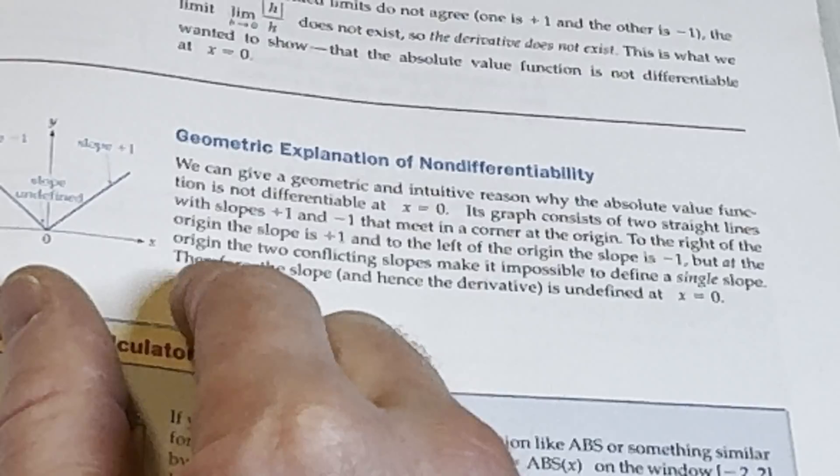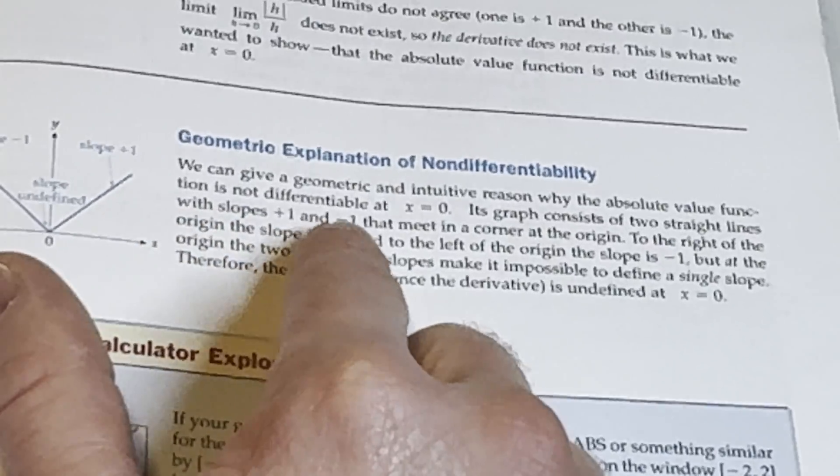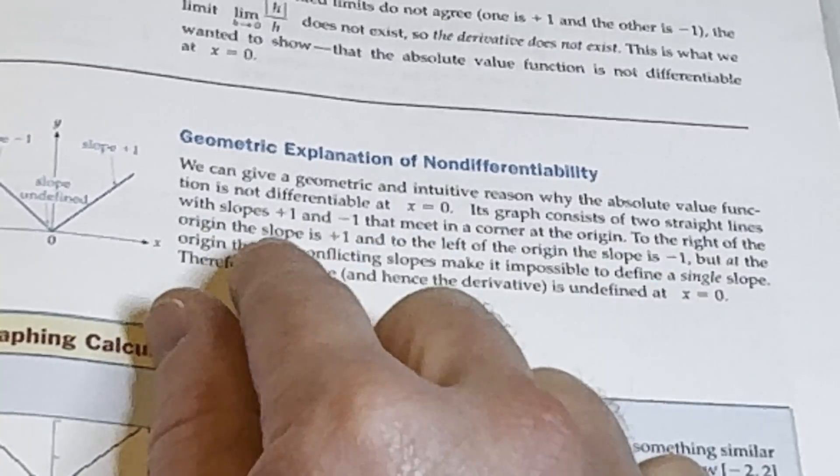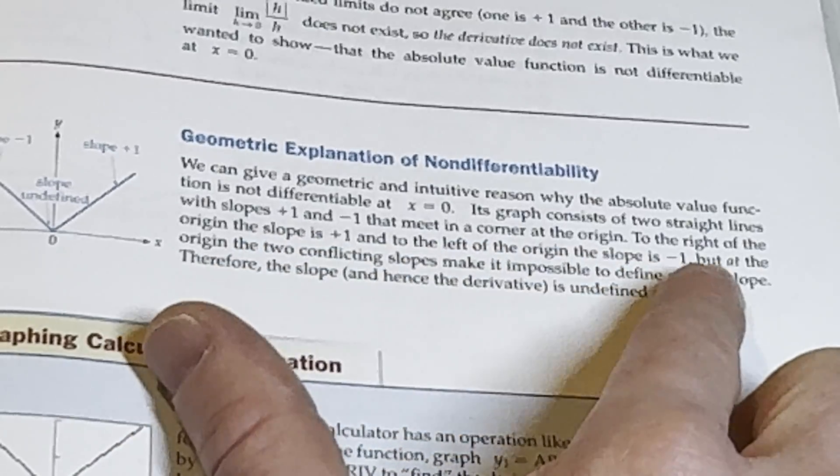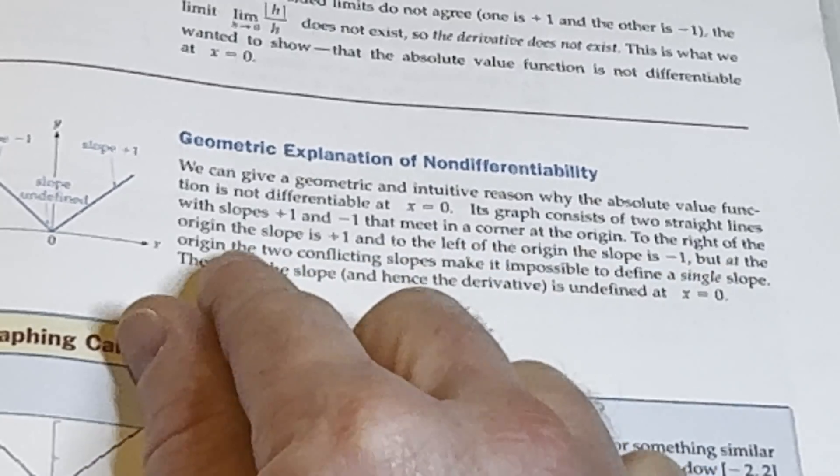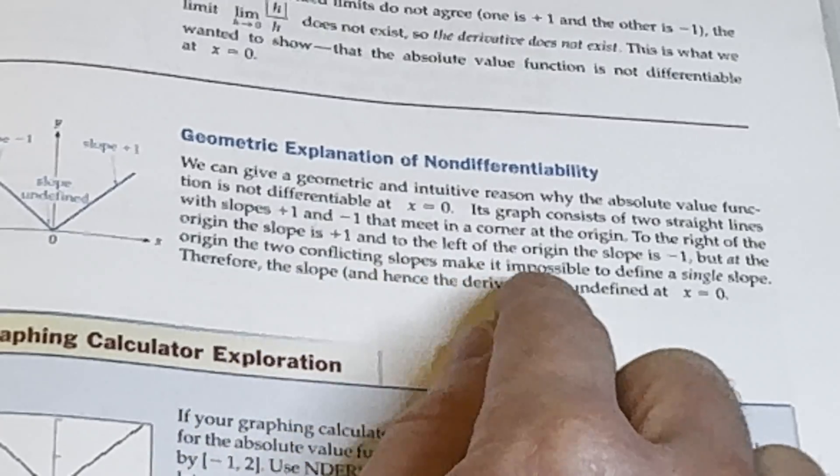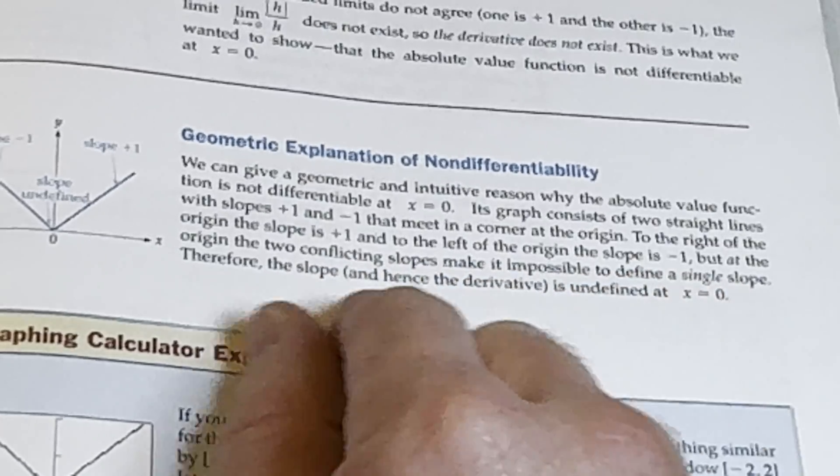Let's read it. Its graph consists of two straight lines with slopes plus 1 and minus 1 that meet in a corner at the origin. To the right of the origin, the slope is plus 1. And to the left of the origin, the slope is negative 1. But at the origin, the two conflicting slopes make it impossible to define a single slope.